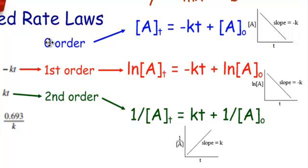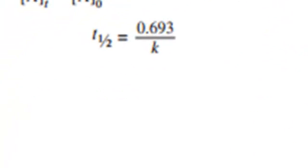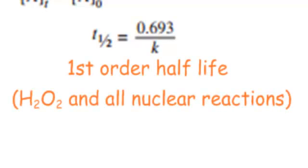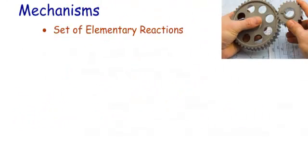It's only going to give you a straight line on one of those graphs, because it's only going to be zero, first, or second order. They also give you an equation: T one-half equals 0.693 over k — that is the half-life equation. This equation only works for first order reactions, which includes things like nuclear reactions and decomposition of hydrogen peroxide. So if they ask you to find the half-life, just take 0.693 over k.